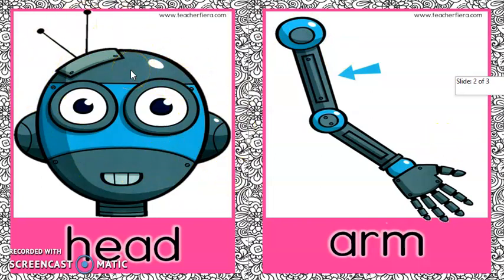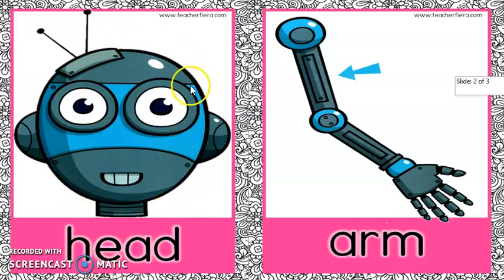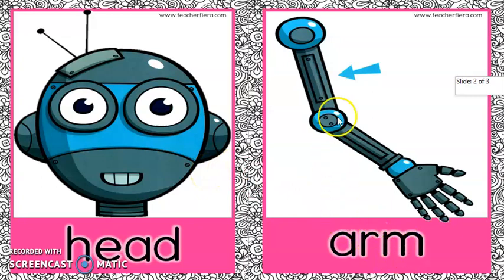This is the body parts of the robot. Okay, maksudnya body parts tu maksudnya bahagian badan robot. Number 1: Head — head ni kepala. Number 2: Arm. What is arm? Arm adalah awak punya lengan. Arm maksudnya lengan.